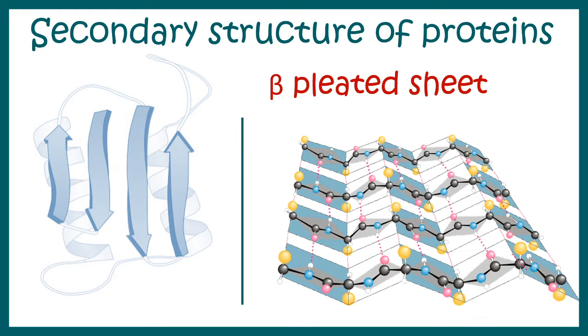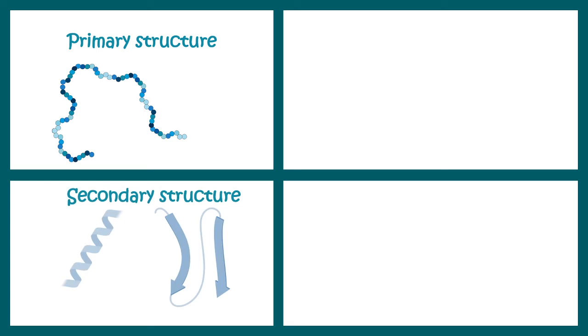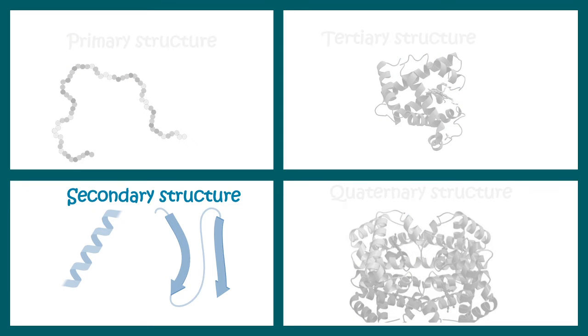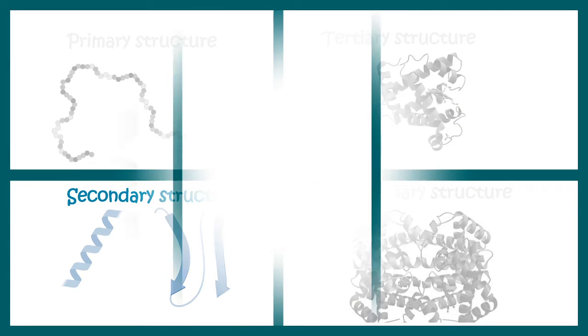Protein structure can be divided into different structural levels starting from primary structure, then secondary structure, tertiary and quaternary structure. Now we are focusing on the secondary structural features.